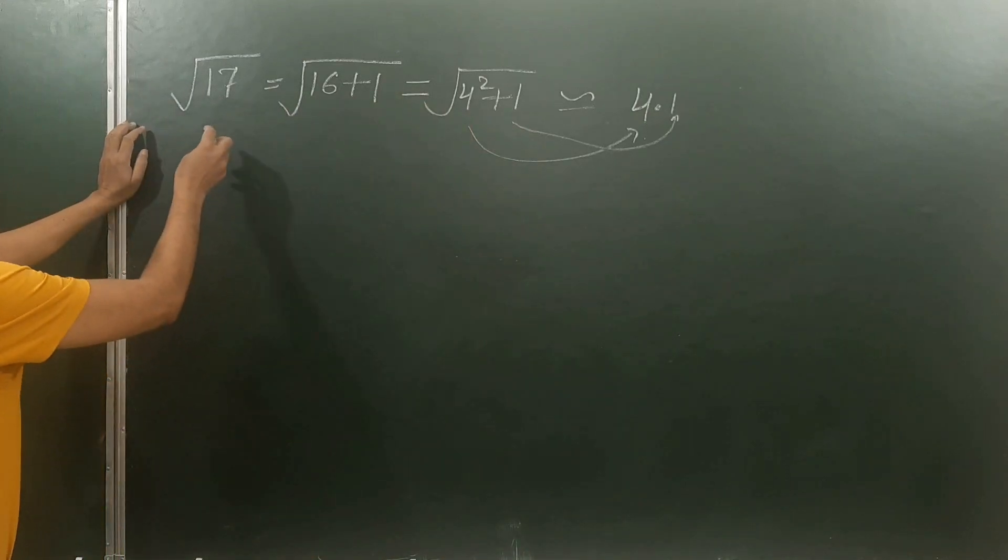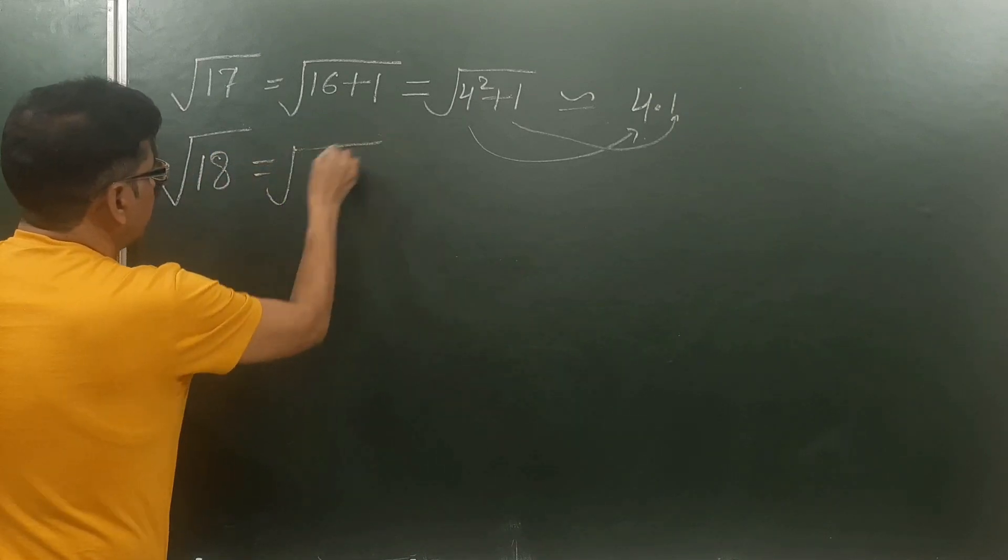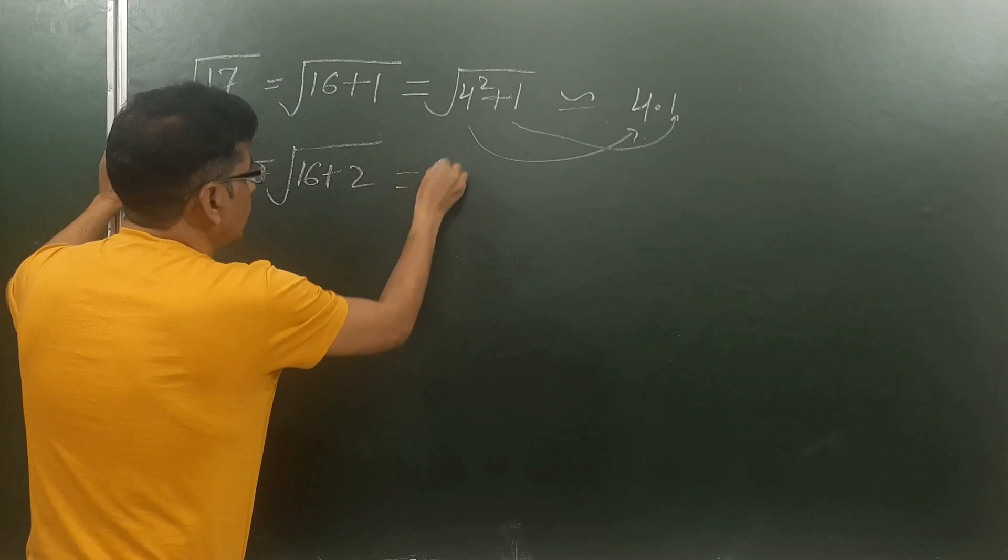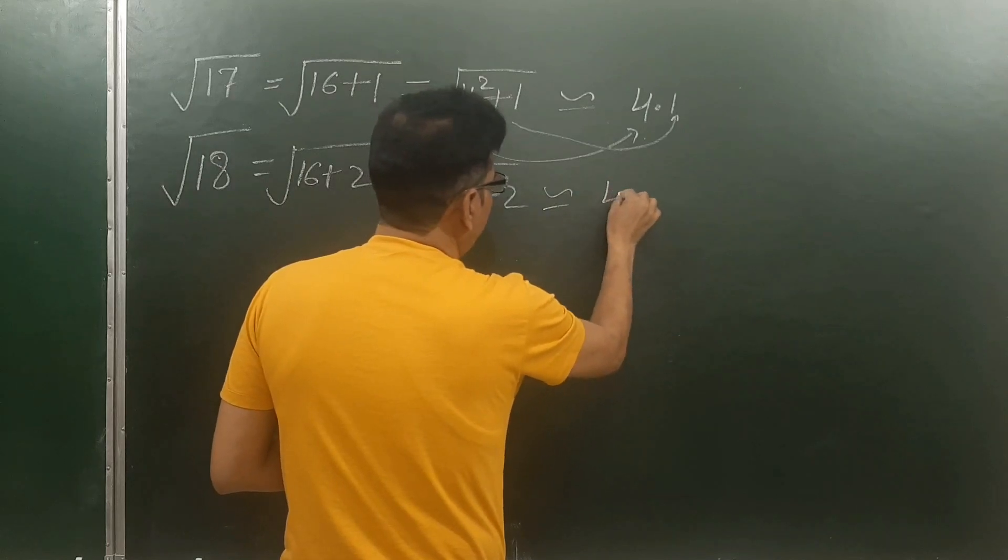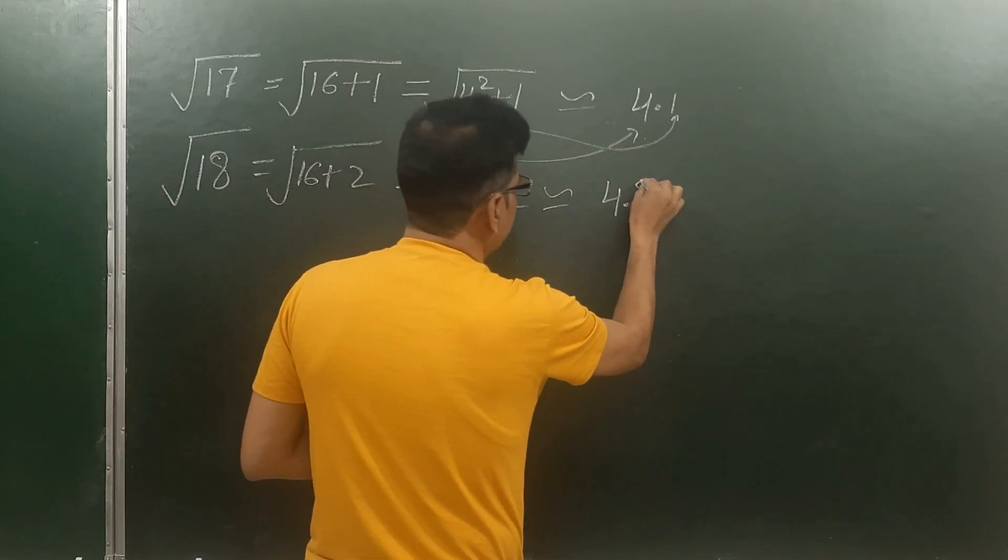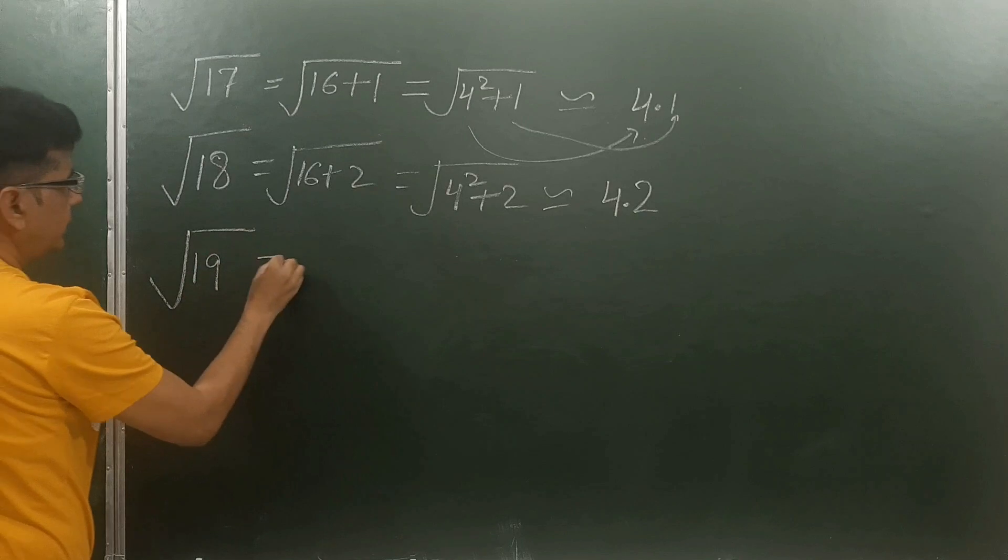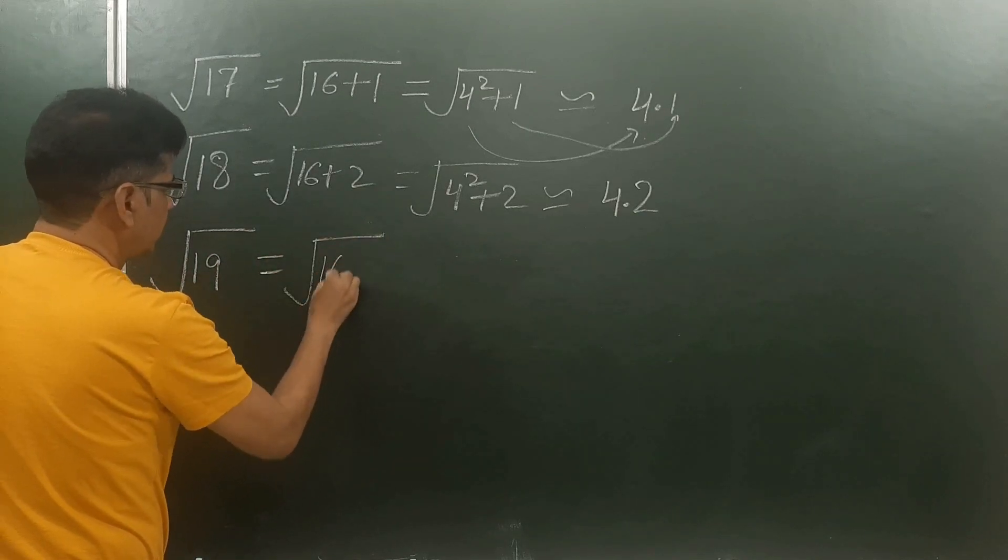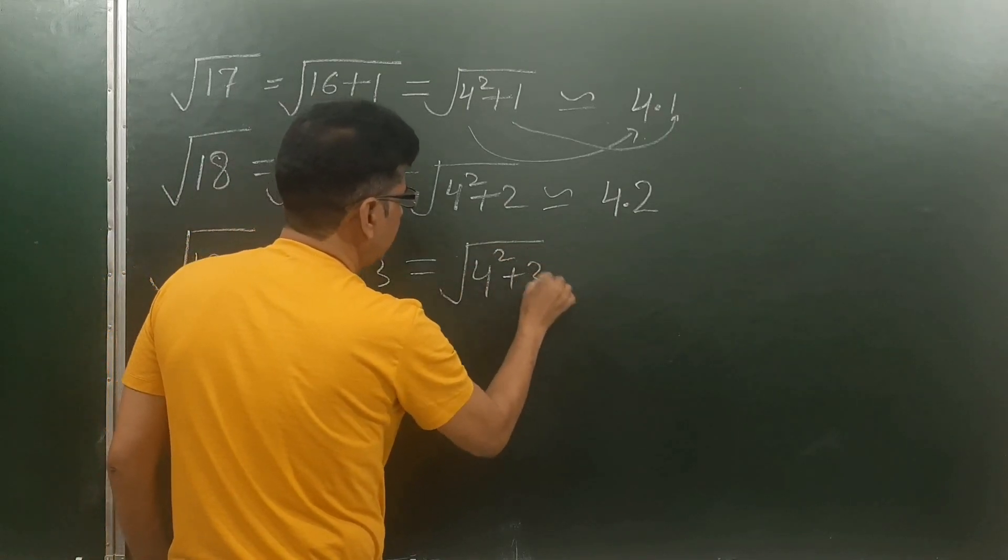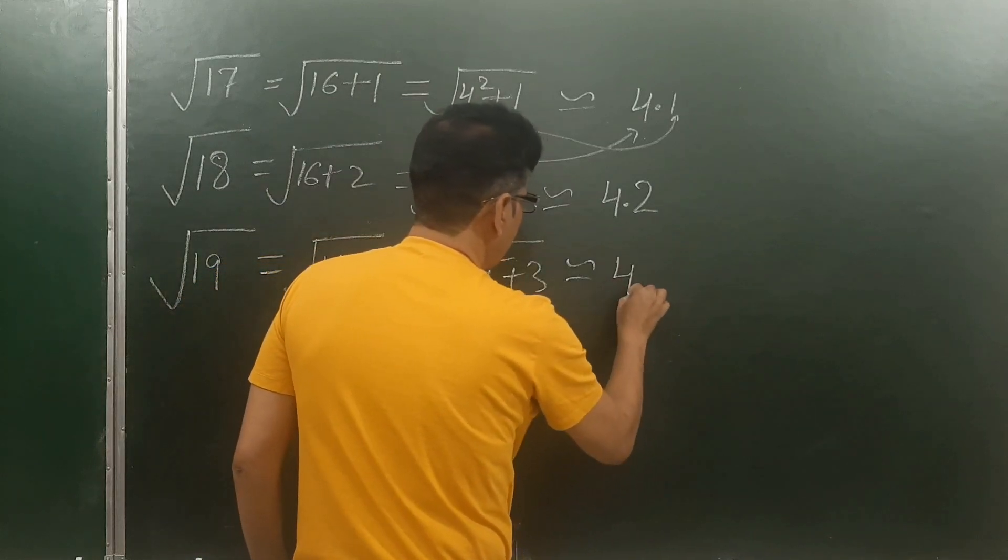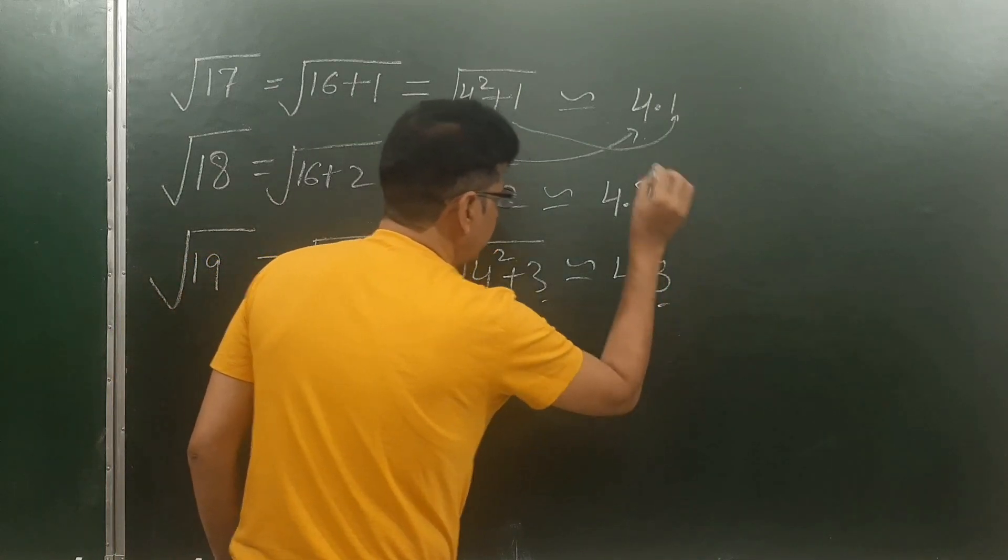Take the number 18. This can be written as 16 + 2 = 4² + 2, so the square root is 4.2. Square root of 19 equals 16 + 3 = 4² + 3, so this is 4.3.